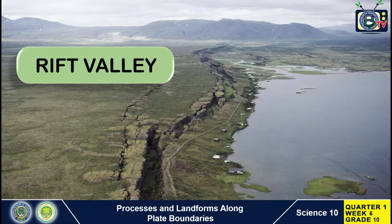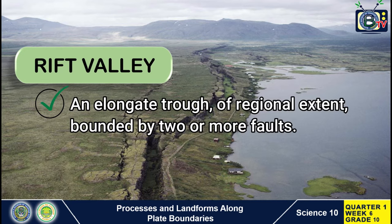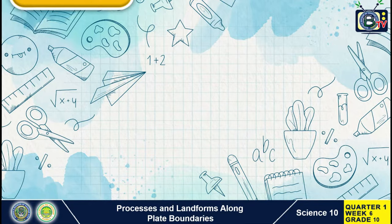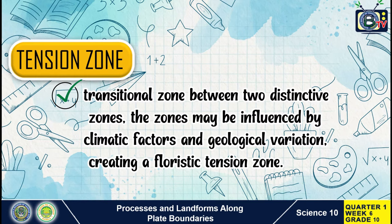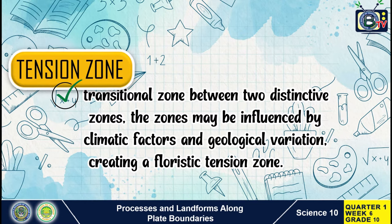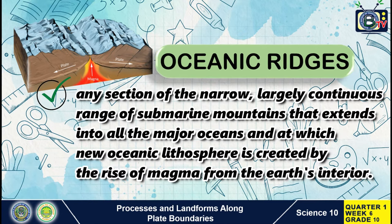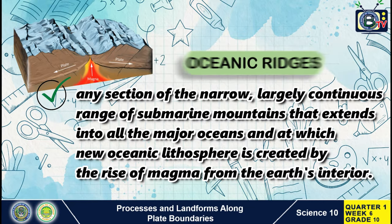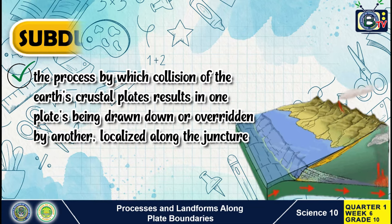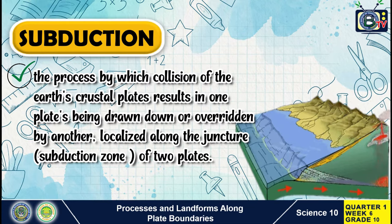Another word is rift valley — an elongate trough of regional extent bounded by two or more faults. Next is tension zone — a transitional zone between two distinctive zones, which may be influenced by climatic factors or geological variation, creating a floristic tension zone. The next word is oceanic ridges — any section of the narrow, largely continuous range of submarine mountains that extends into all the major oceans and at which new oceanic lithosphere is created by the rise of magma from the Earth's interior. And the last word is subduction — the process by which collision of Earth's crustal plates results in one plate being thrown down or overridden by another, localized along the subduction zone of two plates.